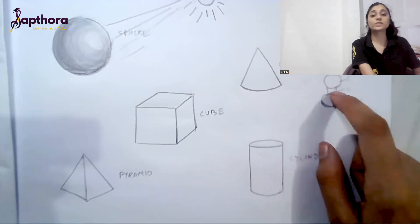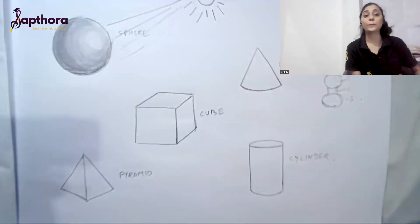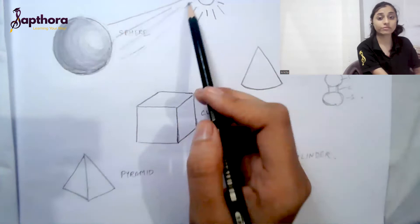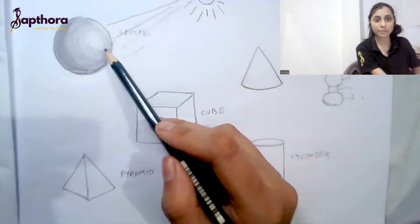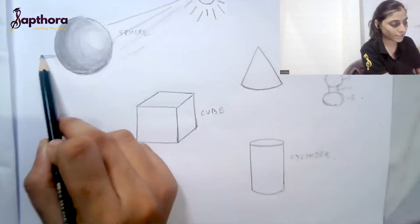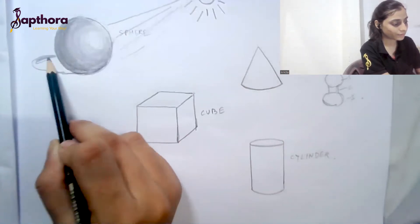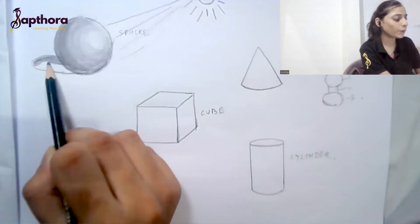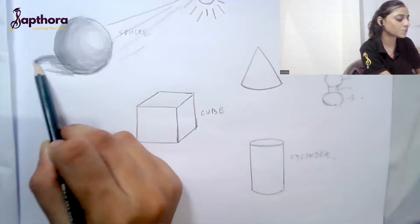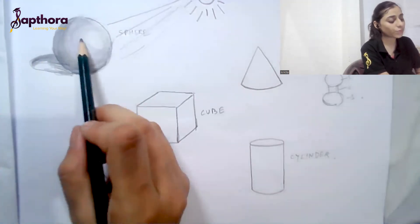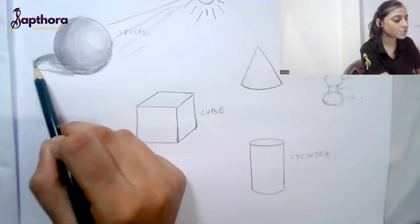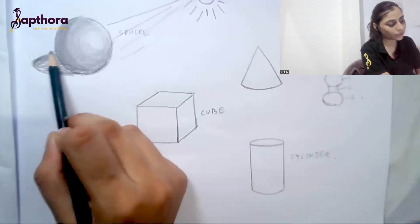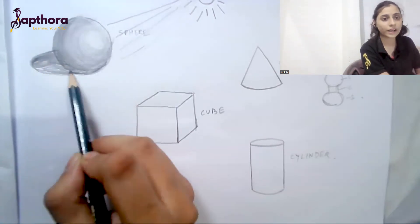Now we'll move to the shadow. Always remember: where the light falls, the shadow will fall in the opposite direction. If the source of light is coming from here, the shadow will form this way. To decide the shape of the shadow, convert the 3D shape into a 2D one — for the sphere, the shadow is a little oval shape like this.